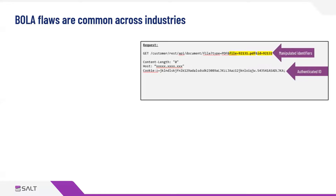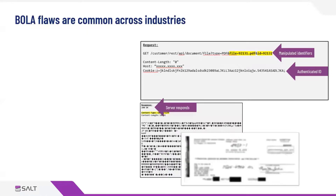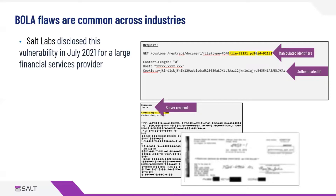Those are the parameters that I'm going to manipulate. The server response in this case was actually an image — that's why the server response looks like garbled data. It was actually a TIF image, specifically a check image, because this example is actually based on threat research from our SALT Labs division. That research was published in July 2021, and you can take a look at the full report to get deeper details on what actually happened with that large financial services provider.